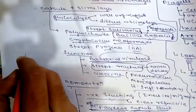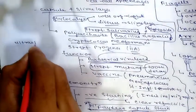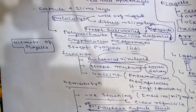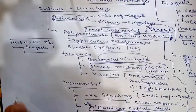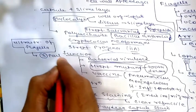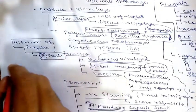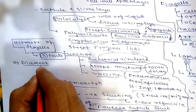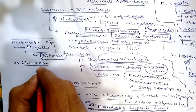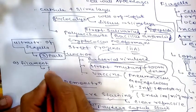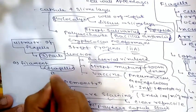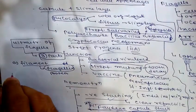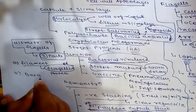The ultrastructure of flagella, as revealed by electron microscopy, shows three parts. The first is the filament — the largest portion, extending from the cell surface to the tip. It is a hollow cylinder made up of a single protein called flagellin.